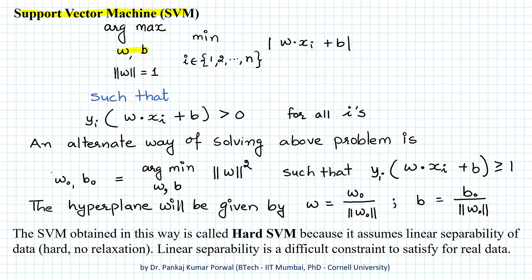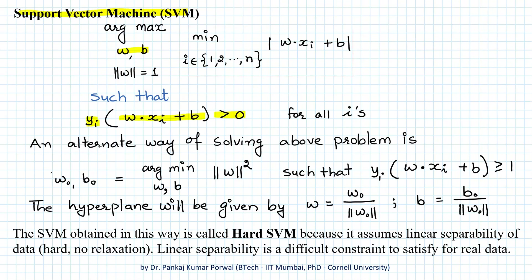One way to find the SVM is to find w and b that maximize the margin with the constraint yi(w·xi + b) > 0. An alternate equivalent formulation is to find w and b that minimize the squared magnitude of w with the constraint yi(w·xi + b) ≥ 1. Note that the w₀ and b₀ obtained this way will not be the same as those from maximizing the margin; we obtain the unit vector and b by dividing w₀ and b₀ by the magnitude of w₀. The SVM obtained in this way is called hard SVM, because it assumes linear separability — a hard condition without any relaxation.